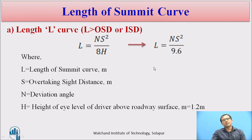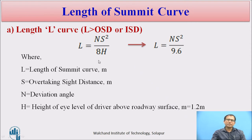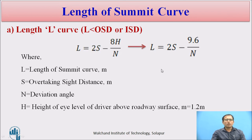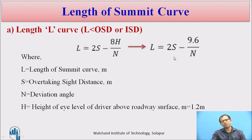For overtaking sight distance: when the length of the curve is more than overtaking sight distance, the equation is L = NS² / 8h. Substituting h = 1.2 m gives L = NS² / 9.6. When the length is less than overtaking sight distance, L = 2S − 8h/N, which reduces to L = 2S − 9.6/N.